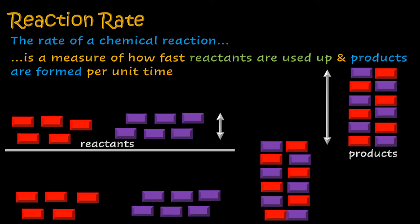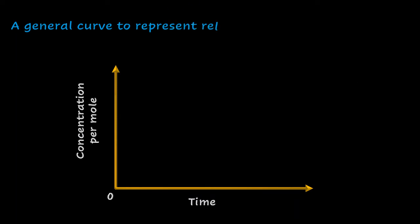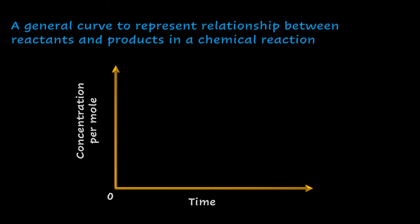A chemical reaction may be looked at in the form of a curve. The curve shown has the vertical axis representing concentration per mole and the horizontal axis representing the time taken for that reaction to take place. As is true for all graphs, we have an origin assigned the value of zero, showing that the reaction has not started.